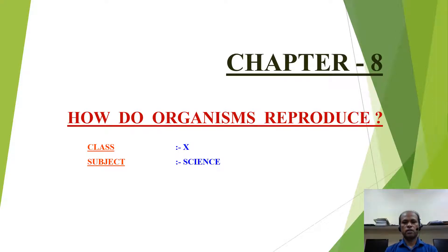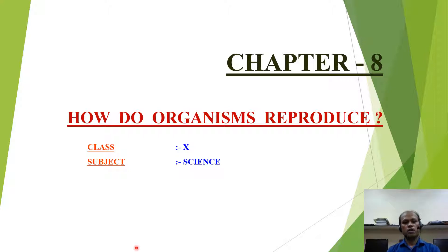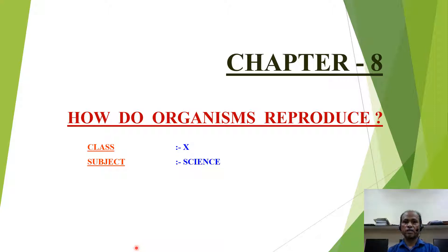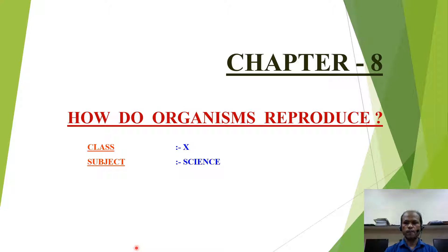Hello, good morning dear students. This is Chapter 8: How Do Organisms Reproduce. In this chapter we are going to learn about the methods of reproduction, importance of reproduction, and types of reproduction — that is asexual and sexual reproduction — and how reproduction takes place in unicellular organisms. So let us begin.